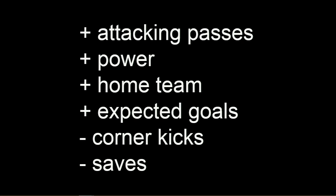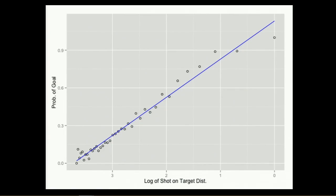The features that proved to be important were attacking passes — the number of passes in the attacking third of the field. We built a power statistic, which I'll talk about in a minute. Home team advantage is huge in soccer — that's probably not surprising. We also built an expected goal statistic, which combines where shots were taken from and the number of shots to estimate how many goals you'd expect to score, making it less susceptible to randomness than just using goals. Corner kicks and saves turned out to have very little predictive power. We did a log-linear regression showing the relationship between shot distance and probability of goal — that's what we used for our expected goal statistic.